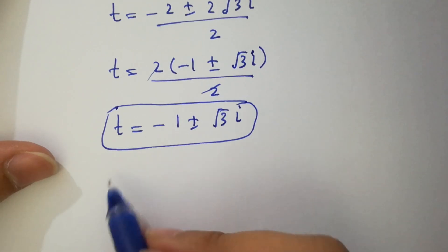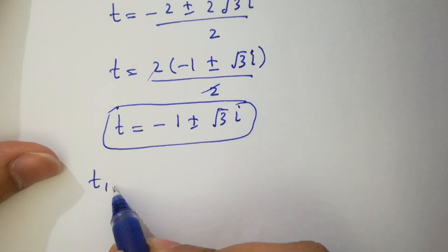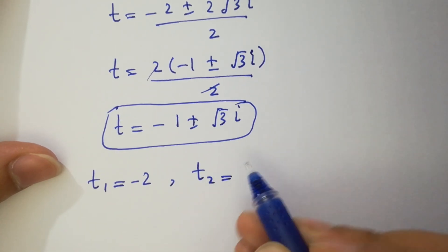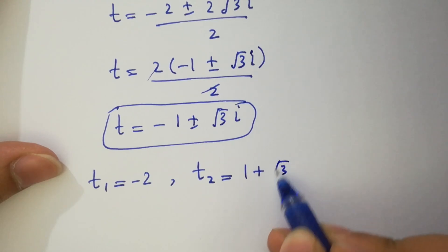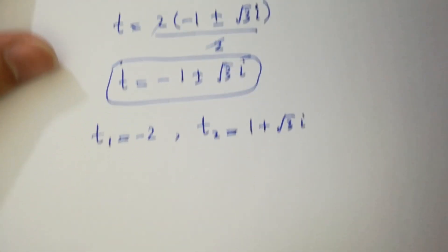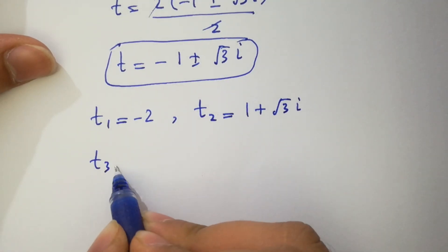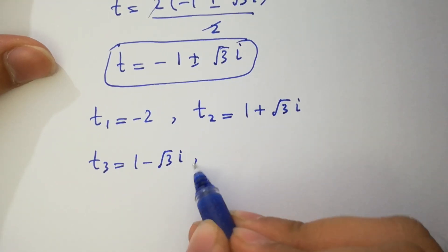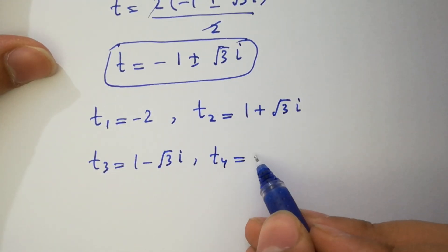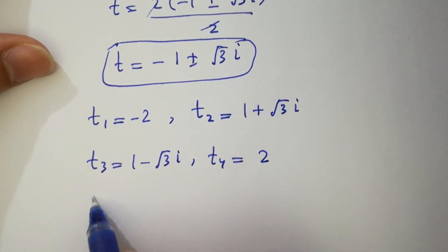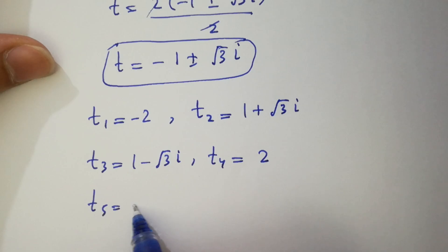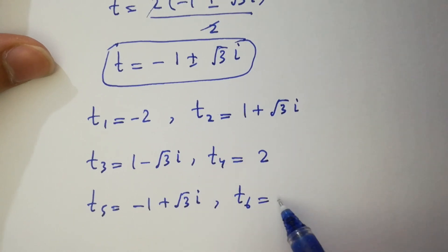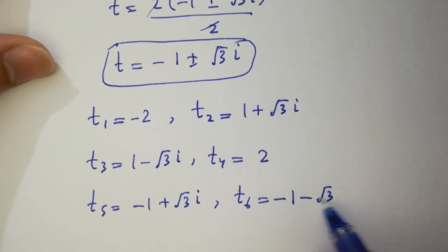So finally we have six solutions here: t₁ equals minus square root of 3 i, t₂ equals 1 plus square root of 3 i, t₃ equals 1 minus square root of 3 i, t₄ equals 2, t₅ equals minus 1 plus square root of 3 i, and t₆ equals minus 1 minus square root of 3 i.